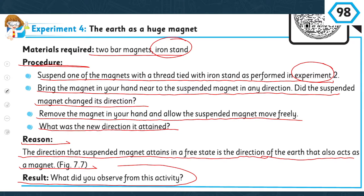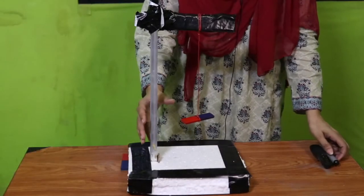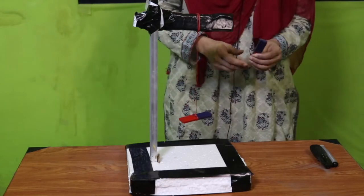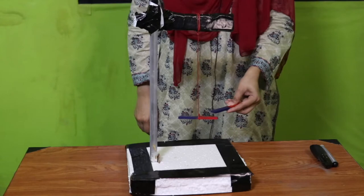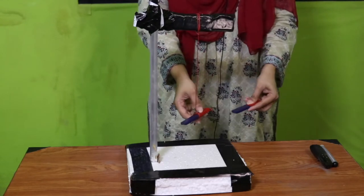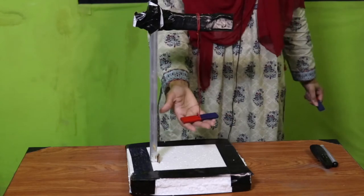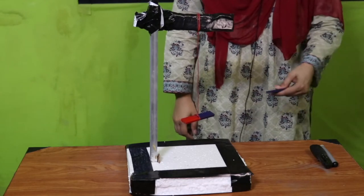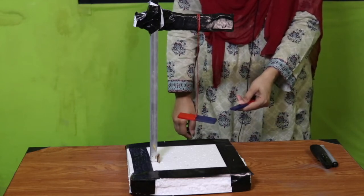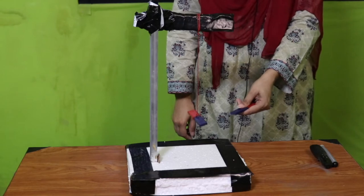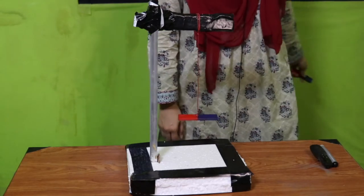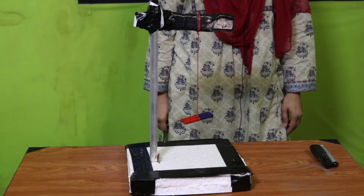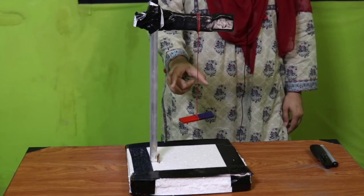Let's do the activity. First, hang one magnet freely on the iron stand. Then bring the other bar magnet close to it. You can see it will start rotating — the direction changes. Now let it become stationary. Now bring the magnet close to it — direction is changing, can you see it? Yes. Now I will place this magnet away and you can see the direction it settles in.